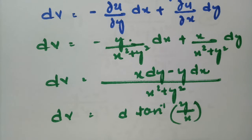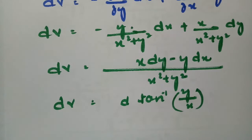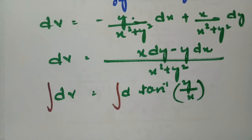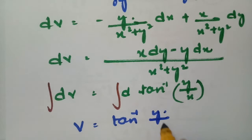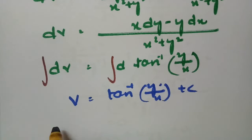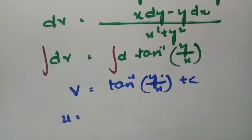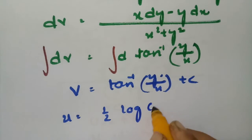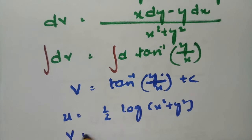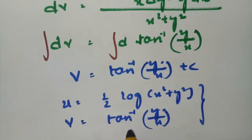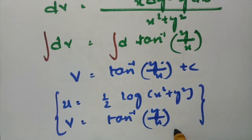This expression (x dy − y dx)/(x²+y²) is the exact differential of arctan(y/x). Integrating both sides, v = arctan(y/x) + c. Therefore, u = ½ log(x²+y²) and v = arctan(y/x), where v is the harmonic conjugate of u.